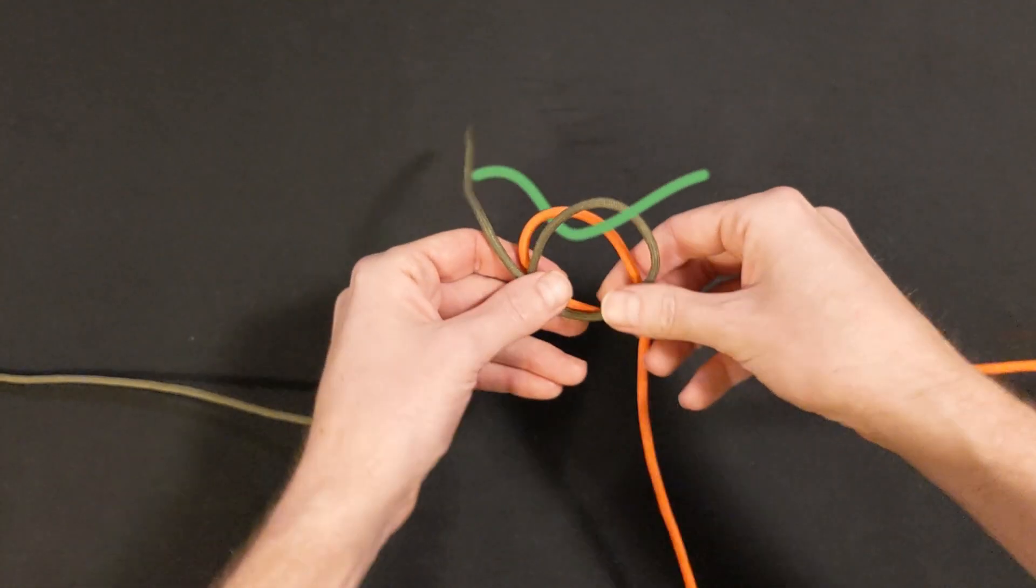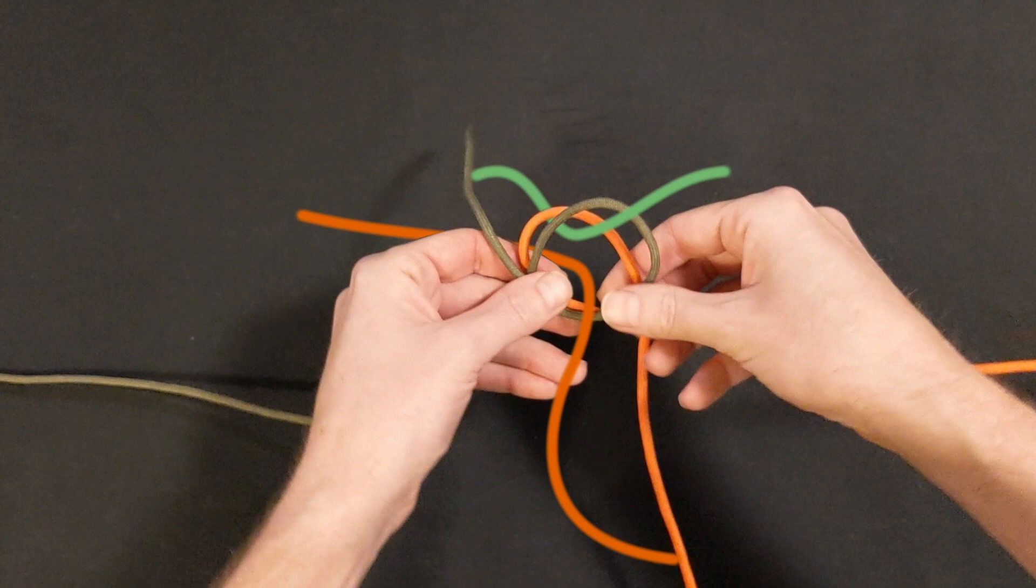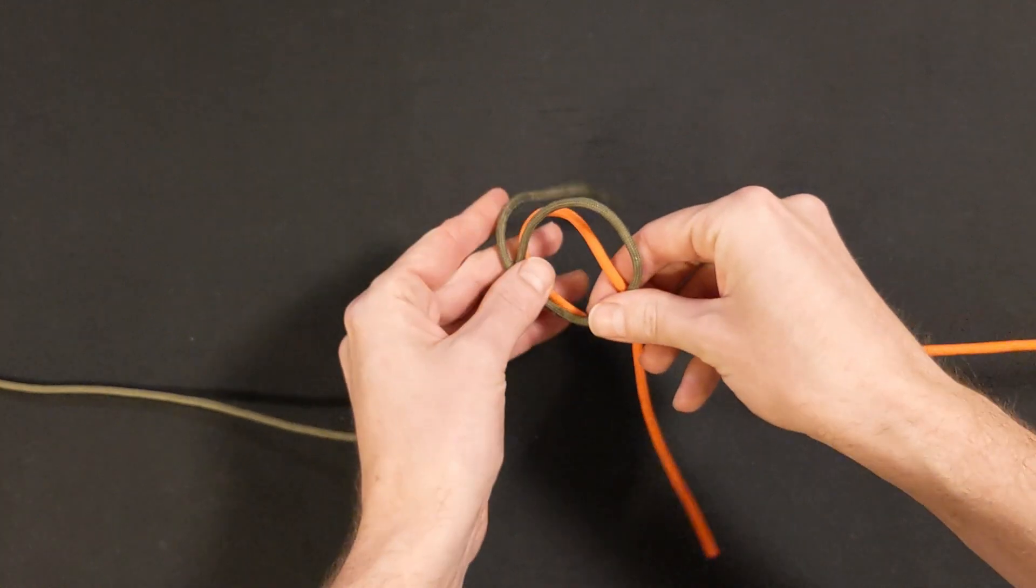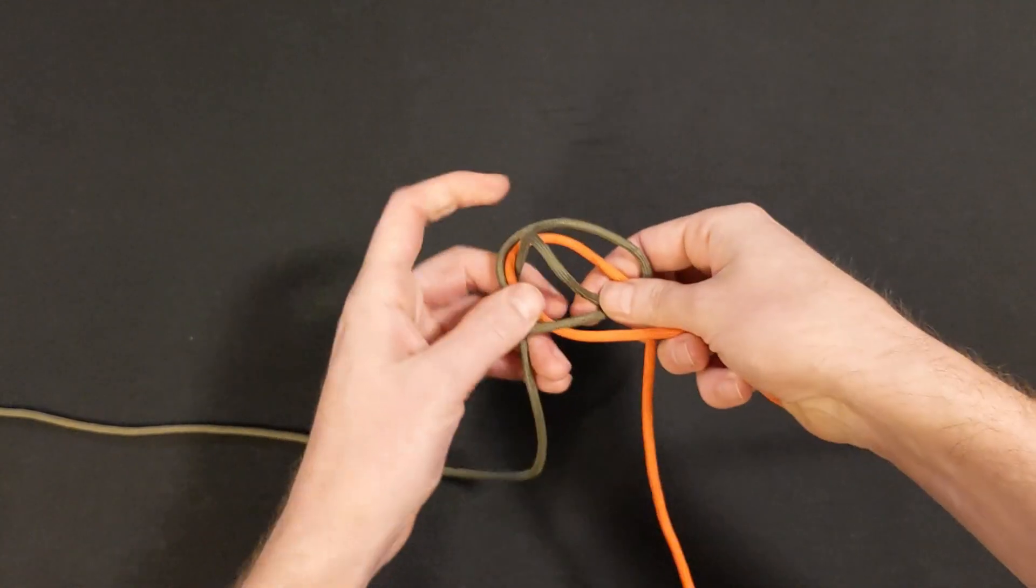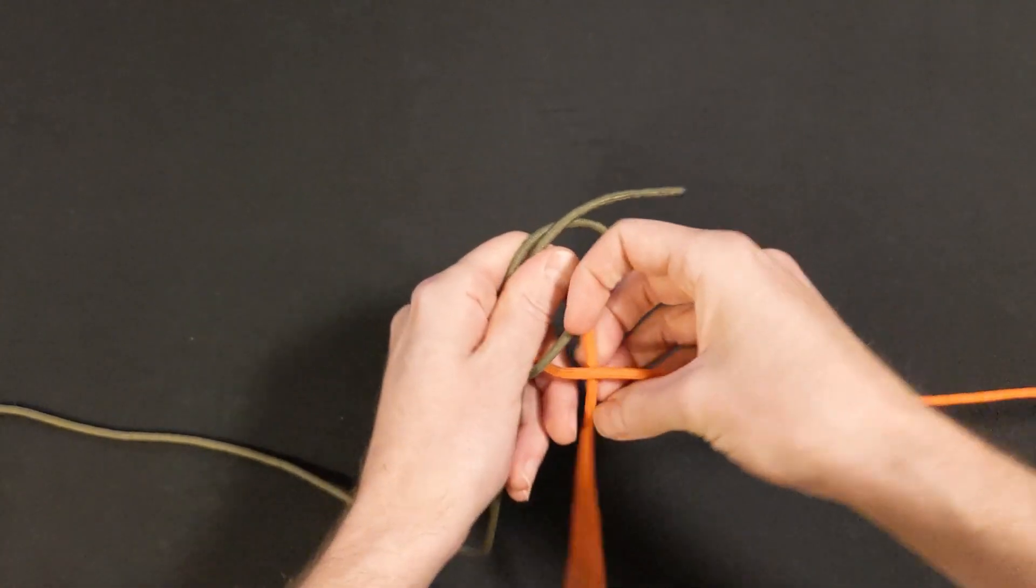Now we just need to thread the working ends into these two loops, creating two interlocking overhand knots. The working end from the 6 should go up into the loops, and the working end from the 9 should go down into the loops.